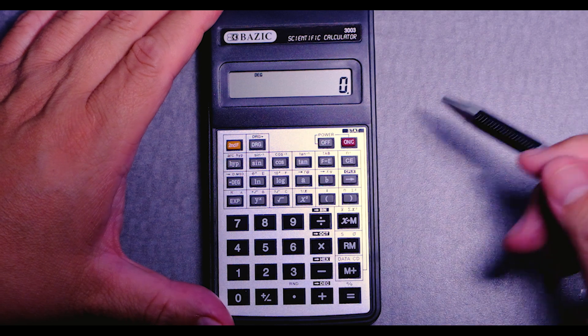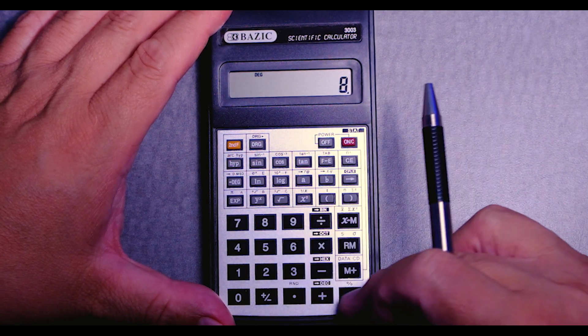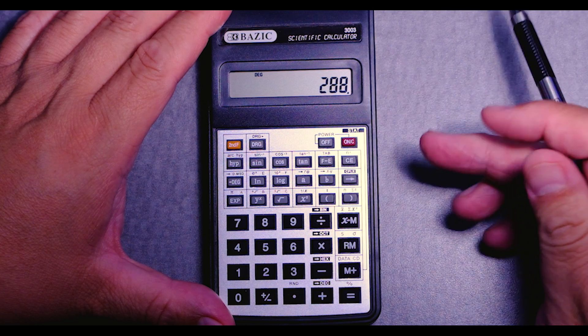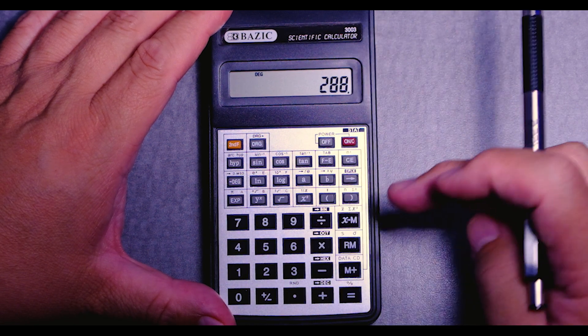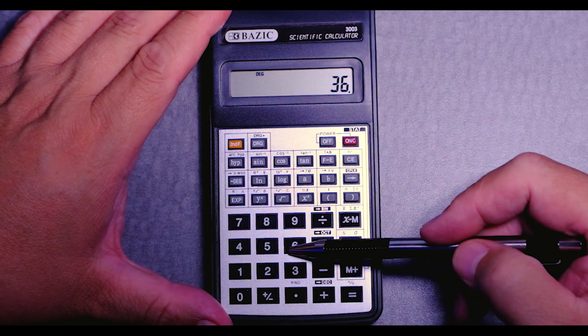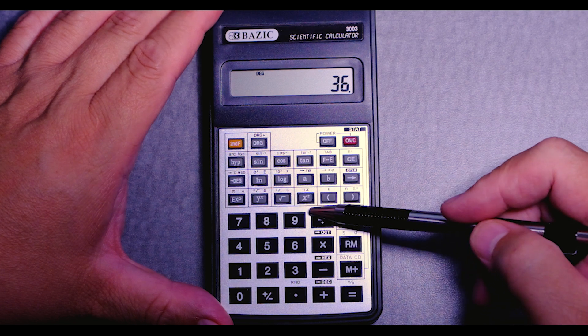This is not an algebraic calculator, I don't think. 36 times 9 equals. Gives you an answer. And then you could, I guess, divide by 8. Definitely, we'll have to read the instructions on how to use it.